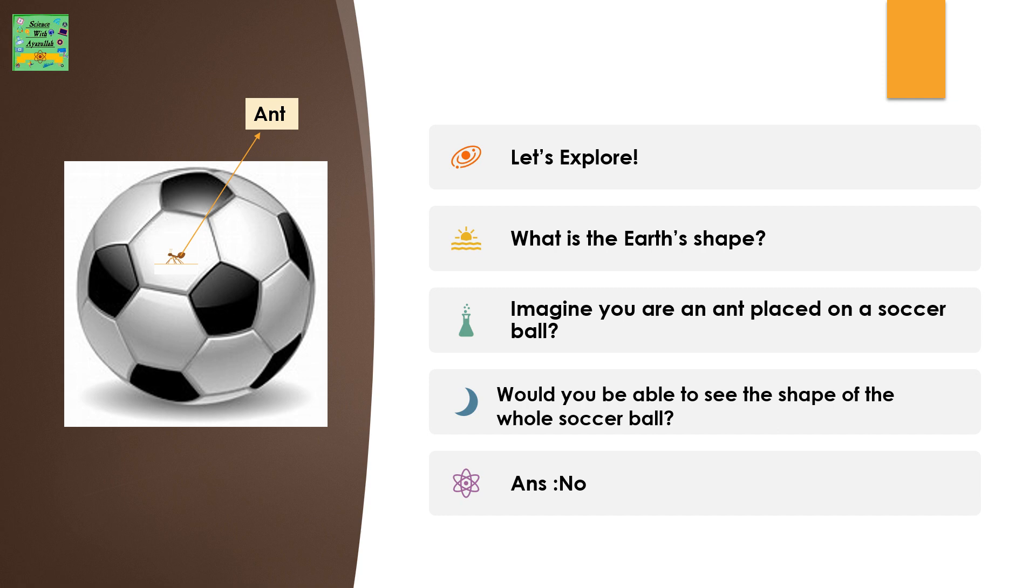Let's explore. We'll get to know what the Earth's shape is. Imagine you're an ant placed on a soccer ball. Would you be able to see the shape of the whole soccer ball being an ant? The answer is no.